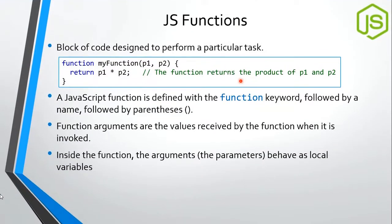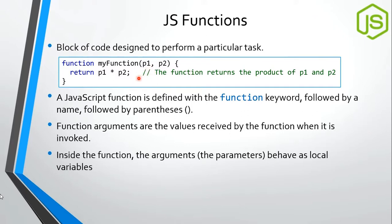We use or declare a function when we perform a specific task, and all the code for that task is inside that function. In JavaScript, we declare a function using the function keyword. There is no return type for a function. When we pass parameters, we don't define any type and we don't use the var keyword for parameters. If you want a return value, you just return something; otherwise, you don't return anything. All arguments inside the function behave as local variables.